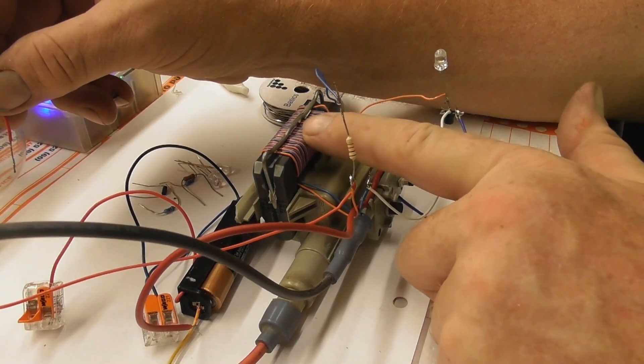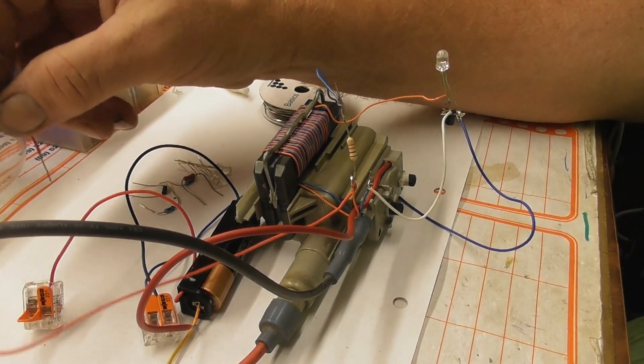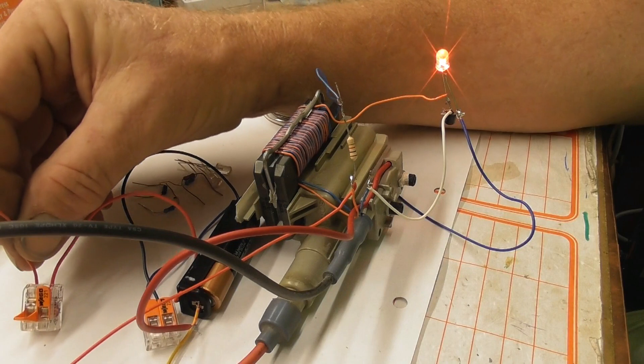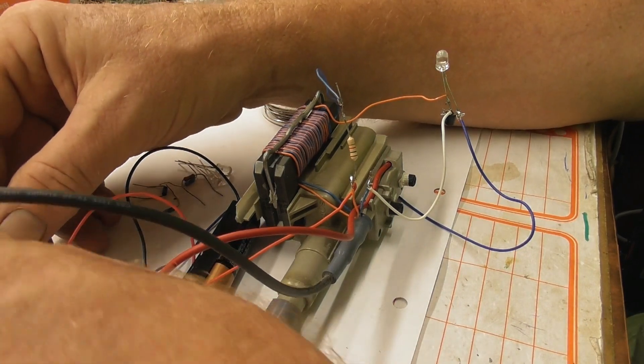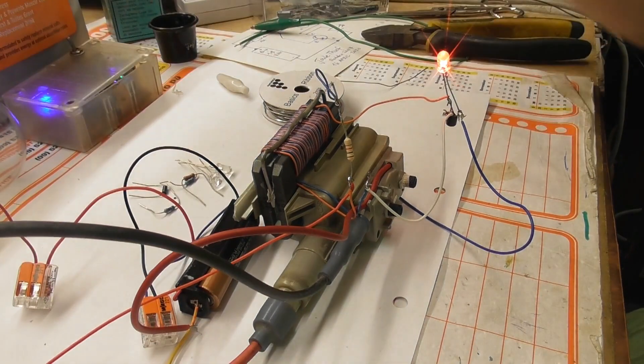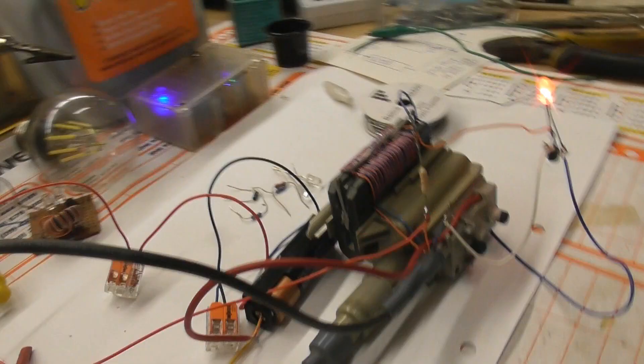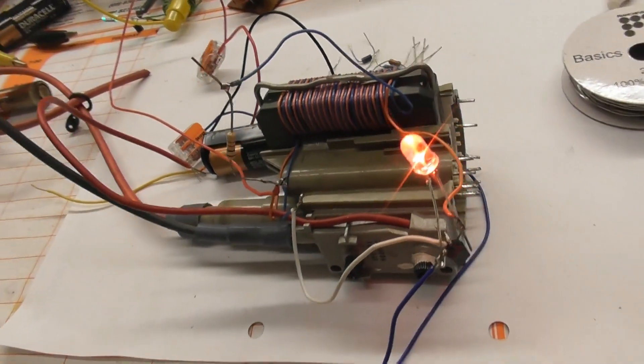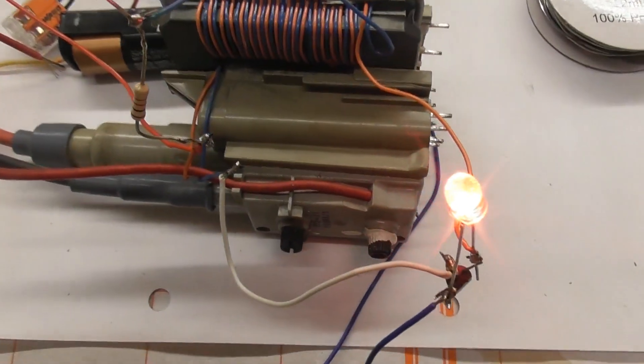Well, I wound this coil on the flyback transformer and surprisingly it actually works. Not that I get power out of it, but enough to get the LED. So the ferrite unit itself seems to do the job. Larger ferrite core. The LED burns quite bright.